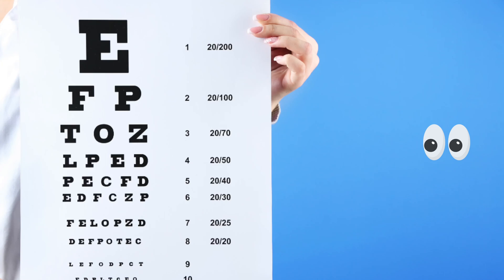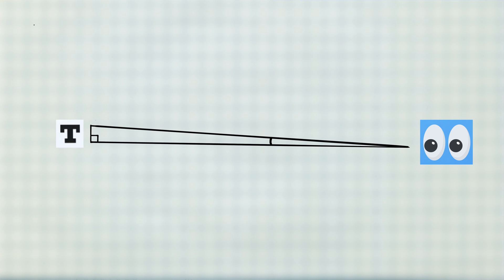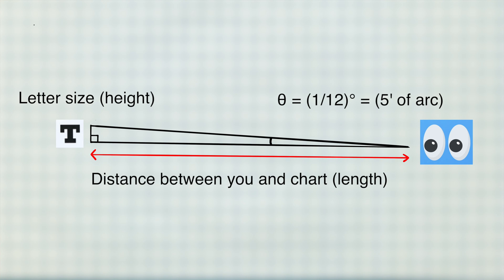What does that mean exactly? To put it in trigonometry terms, in a right-angled triangle, the letter size is your height, the angle is constant at one twelfth of a degree, and the distance between you and the chart is given by the length.